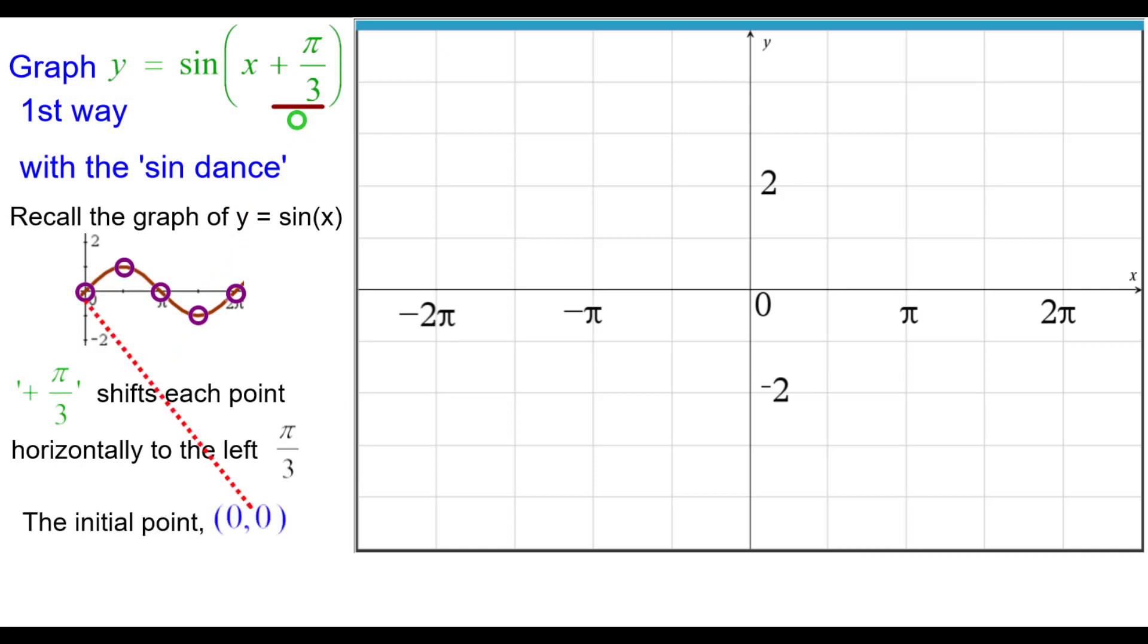The initial point, the origin 0, 0 is shifted to the left, negative pi over 3, 0 because we're shifting pi over 3 to the left, negative pi over 3, 0 so we'll plot that one.